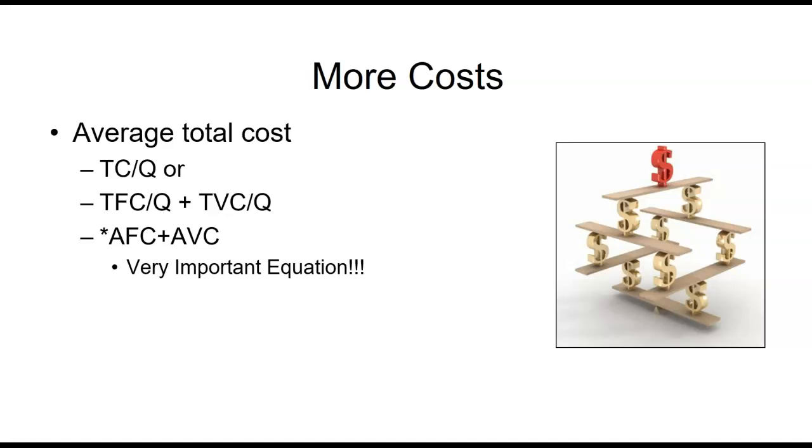You can see my asterisk. This is going to become a very important equation. Now it's not challenging the equation, but it becomes important later when we talk about things like minimizing loss and shutdown scenarios. So the average fixed cost plus average variable cost equals the average total cost. And last is marginal cost. We've seen lots of marginal equations, so it's the same, change in total cost divided by the change in the quantity.